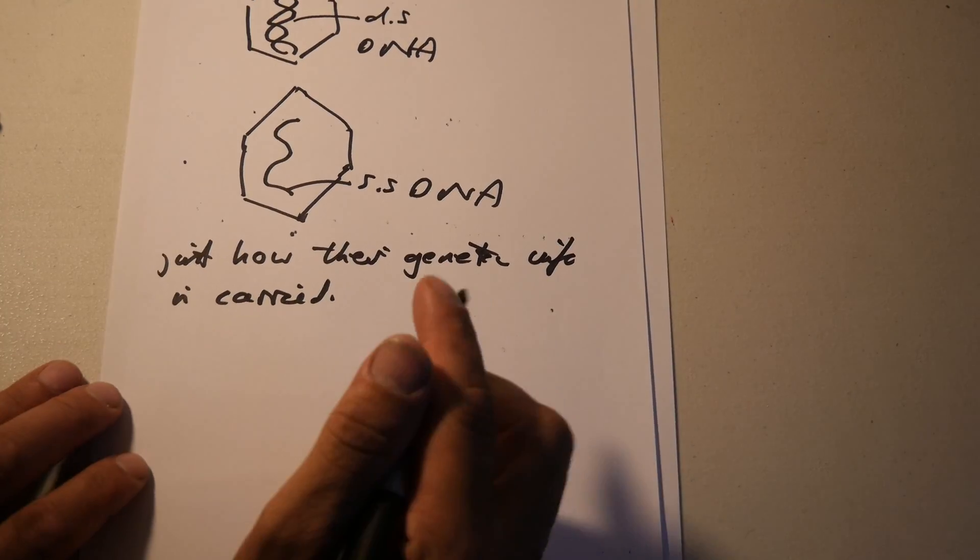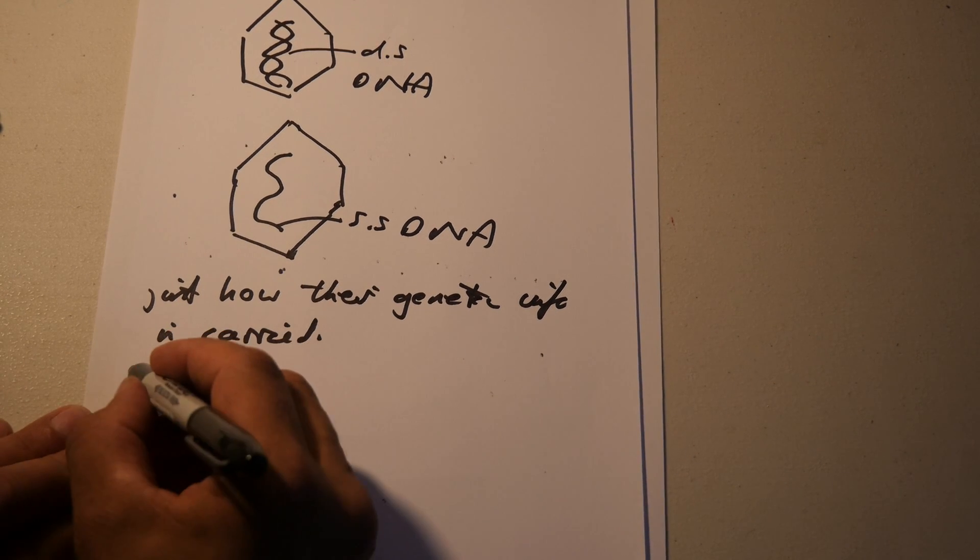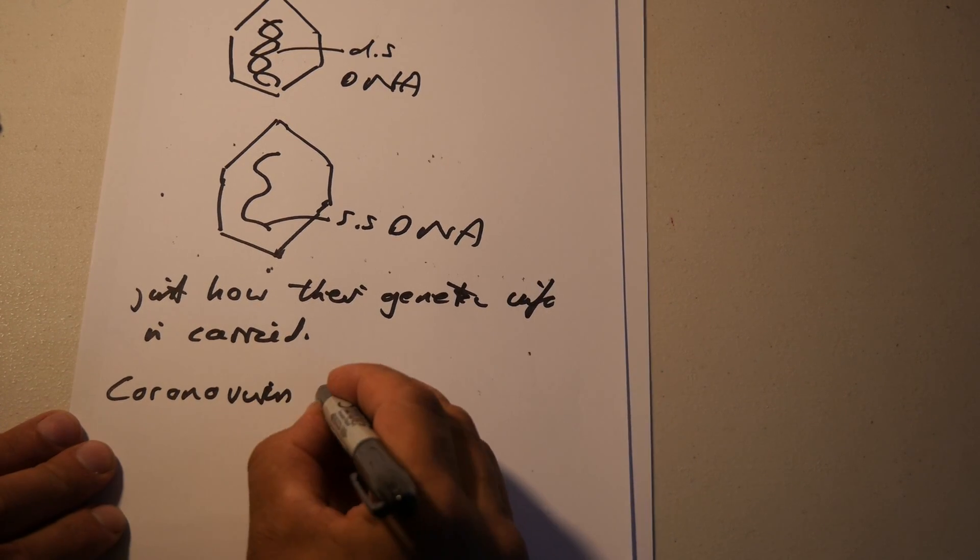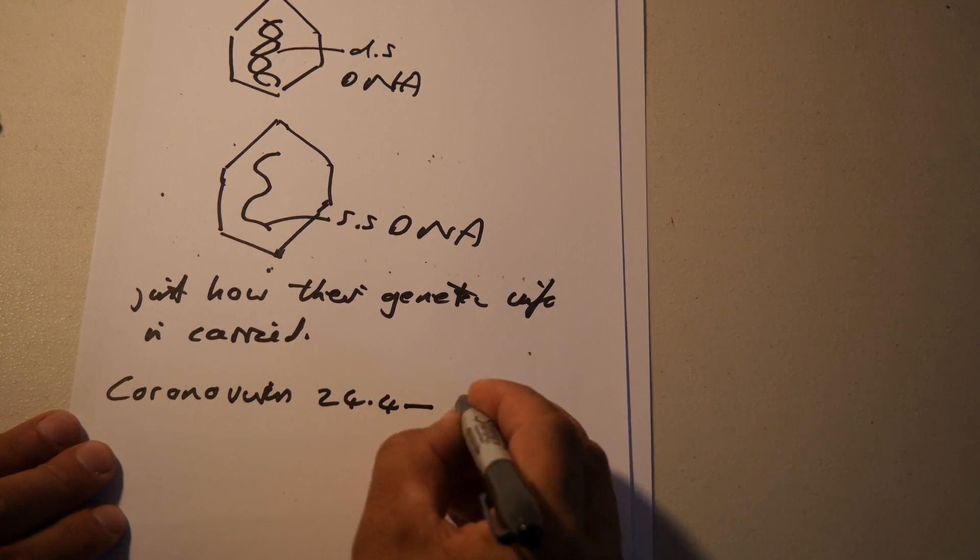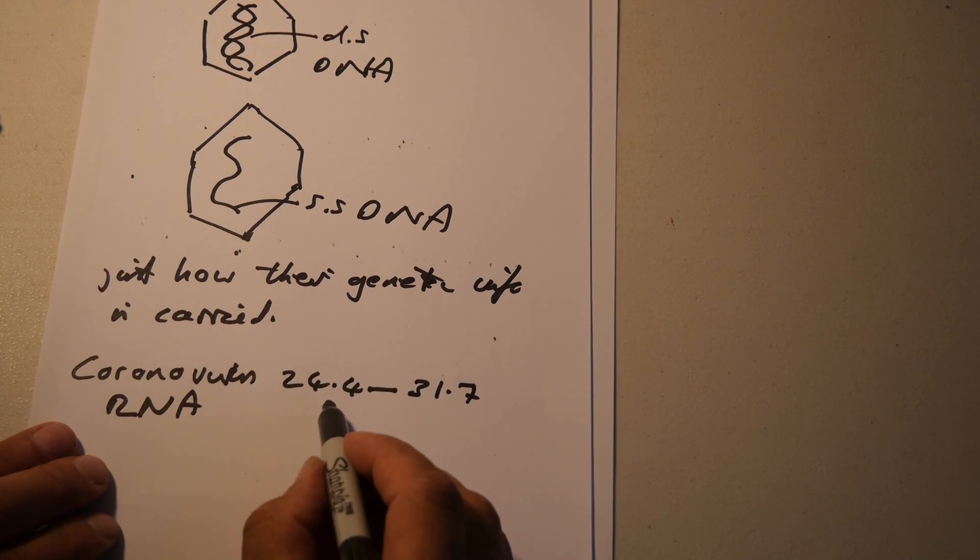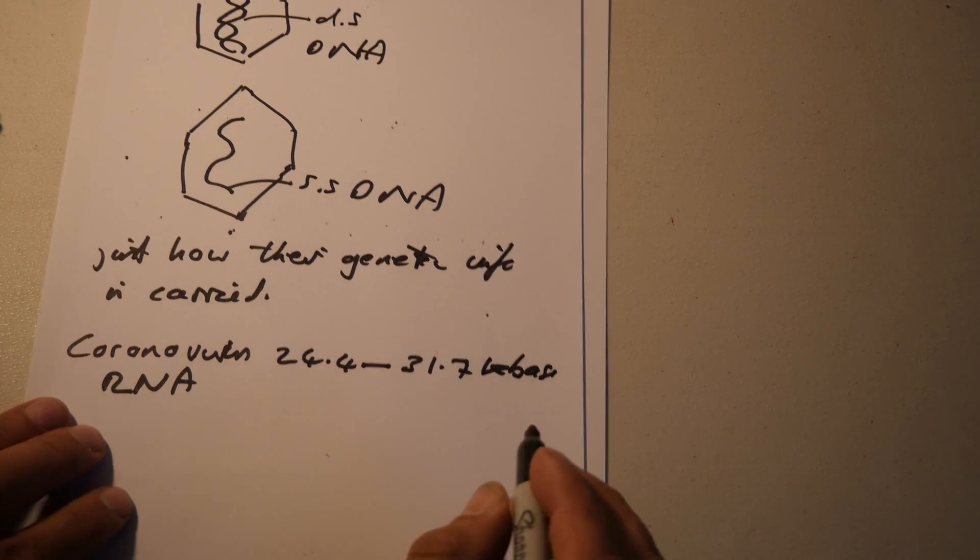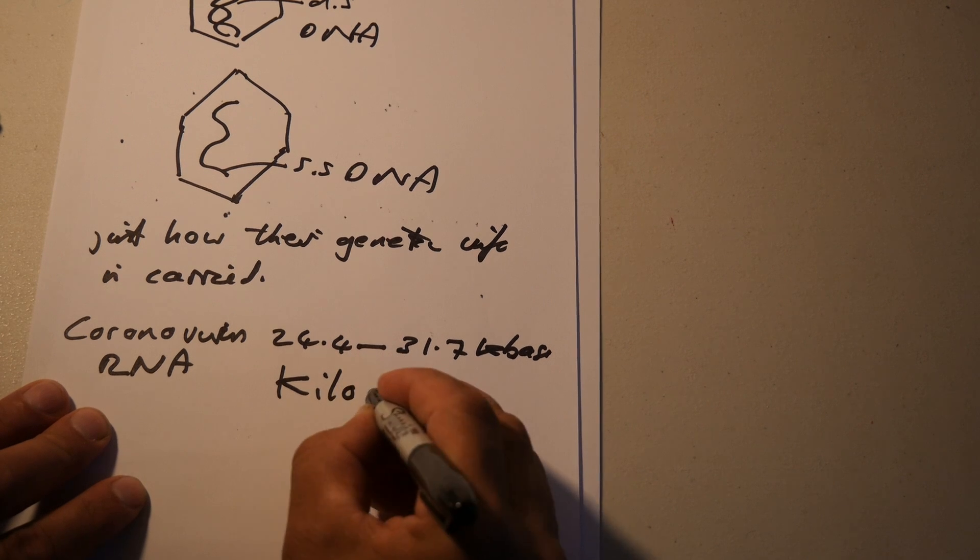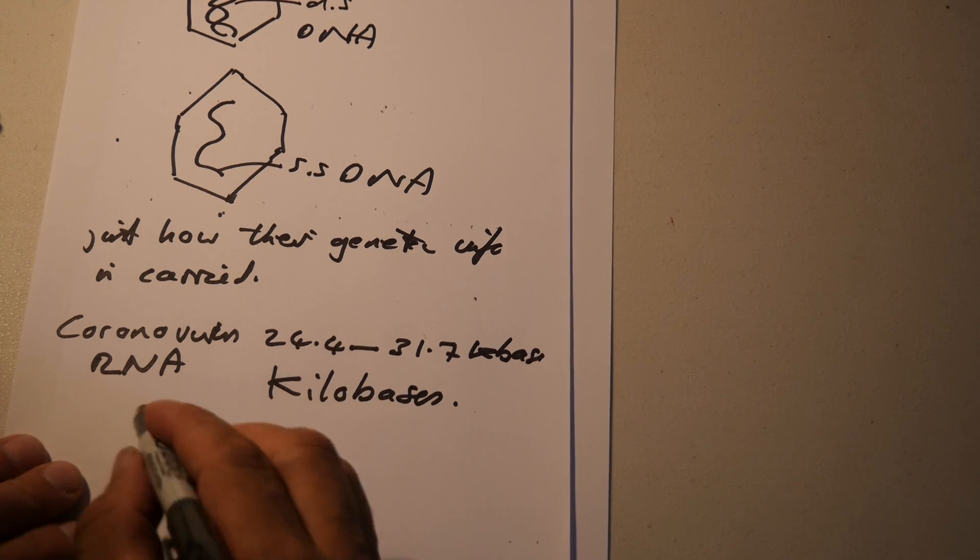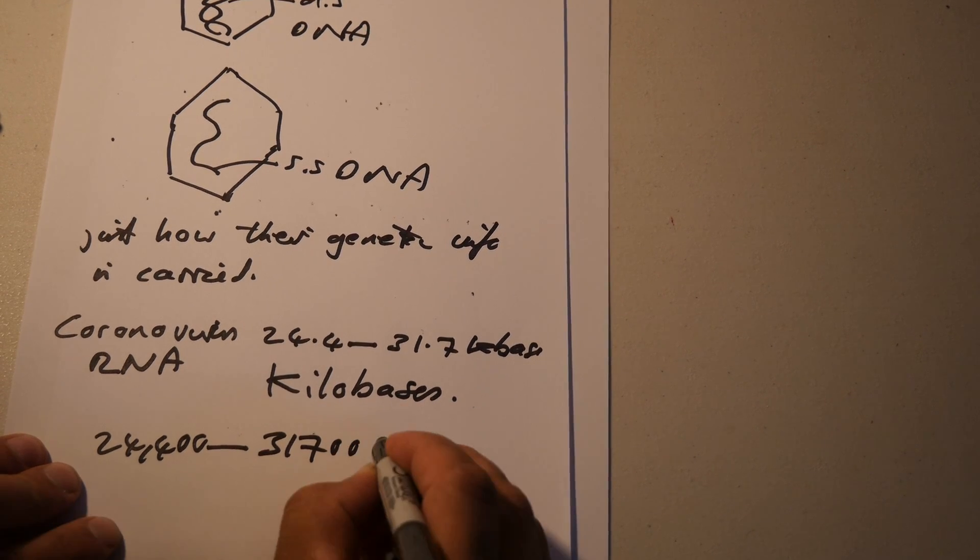Different species of virus, different classes, probably have similar kinds of nucleic acid, but not always. And the coronavirus is 24.4 to 31.7, that's the RNA. So it's 24.4 thousand to 31.7 thousand bases long. Kilobases.